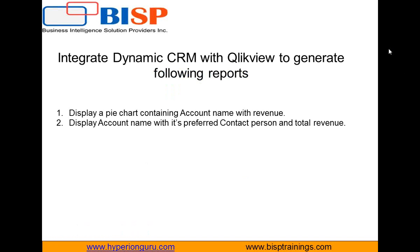Let's look at the requirements. I would like to display a pie chart containing account names with total revenue, display account name, its staff, preferred contact person, and total revenue in a data table. I would also like to add a slider bar to display accounts by total revenue, so that when the user moves the slider, the values in the chart and data table change accordingly.